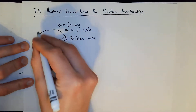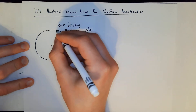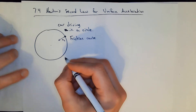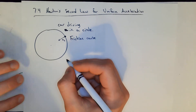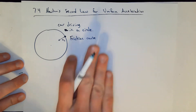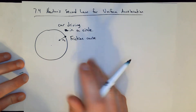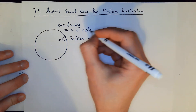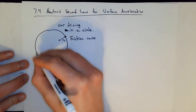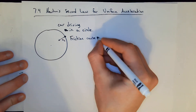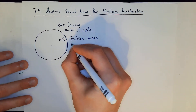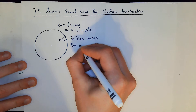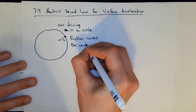This is on a flat road. Later we'll do an example for a car on an incline, which is a different case. On this flat road, friction causes the centripetal acceleration.